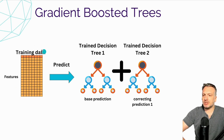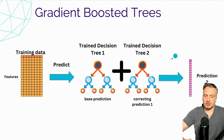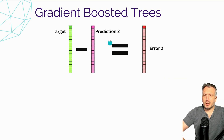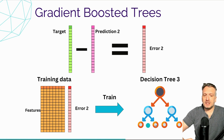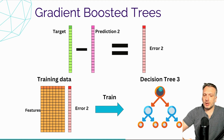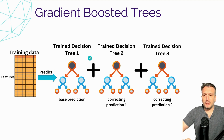When we feed the training data into this new combined model, we get a second set of predictions. With this second set of predictions we are making a second set of errors compared to the target. We can use this new set of errors as a new target to train a third decision tree — one that learns the error made by the base tree and the second correcting tree together. So now we have three trees: a base tree, a first correcting tree, and a second correcting tree.